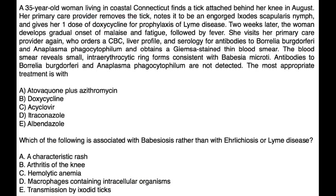Vignette three: A 35-year-old woman living in coastal Connecticut finds a tick attached behind her knee in August. Her provider removes it — an engorged Ixodes scapularis nymph — and gives one dose of doxycycline for Lyme disease prophylaxis. Two weeks later she develops malaise, fatigue, and fever. A CBC, liver profile, serology for Borrelia burgdorferi and Anaplasma phagocytophilum, and a Giemsa-stained thin blood smear are ordered. The smear reveals small intra-erythrocytic ring forms consistent with Babesia microti. Antibodies to Borrelia and Anaplasma are not detected. The most appropriate treatment is atovaquone and azithromycin.